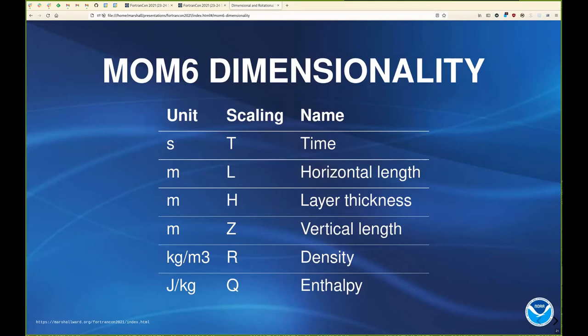These are the current dimensions we implement in MOM6. We have the time units length, horizontal length, but we actually have three length scales. We have a horizontal length scale, a layer thickness, which would represent the vertical size of those finite volume units between the layers. But then we also have to track at times where those things are relative to, say, a reference depth. So we have an absolute vertical length scale that scales differently from the thickness. This is why it's quite important for us to be able to define our own dimensions. We also have density here and enthalpy, which is sort of our proxy for heat or temperature. I won't get into why or how that works. But that is an example of the units we have.